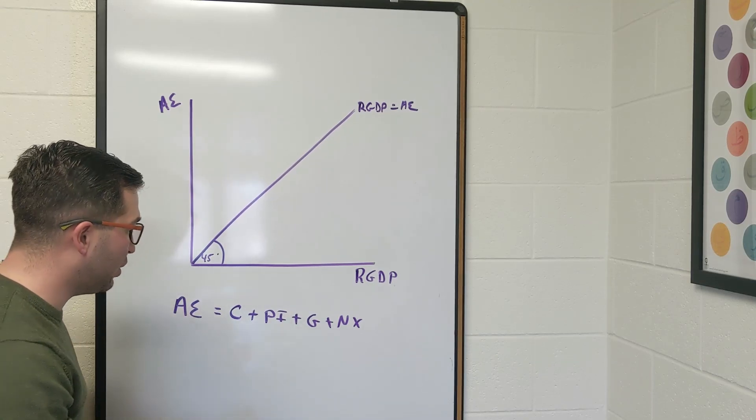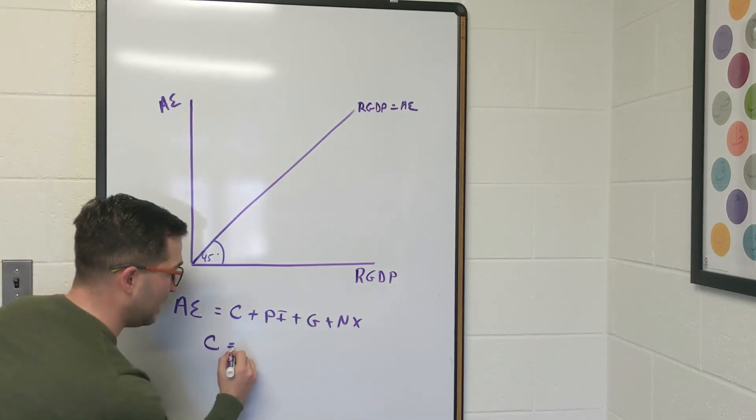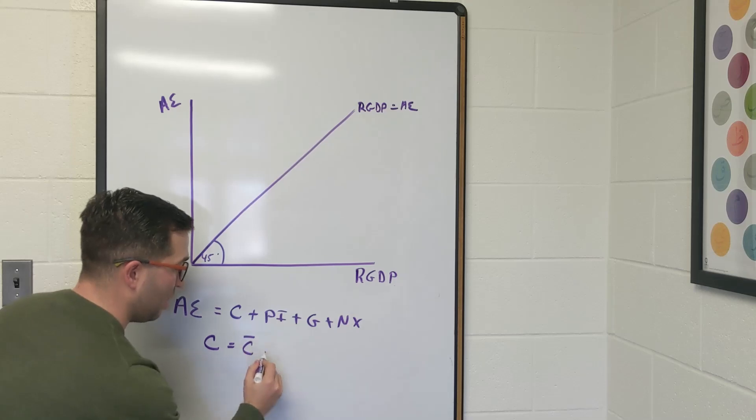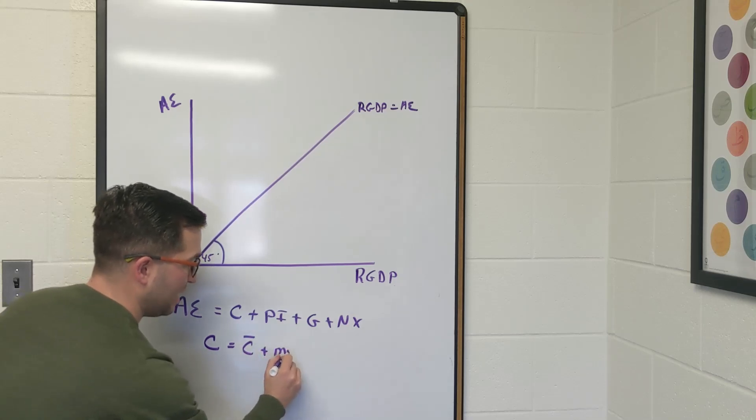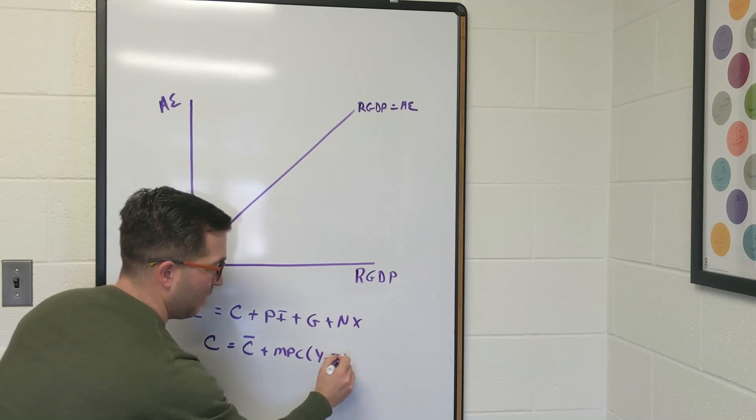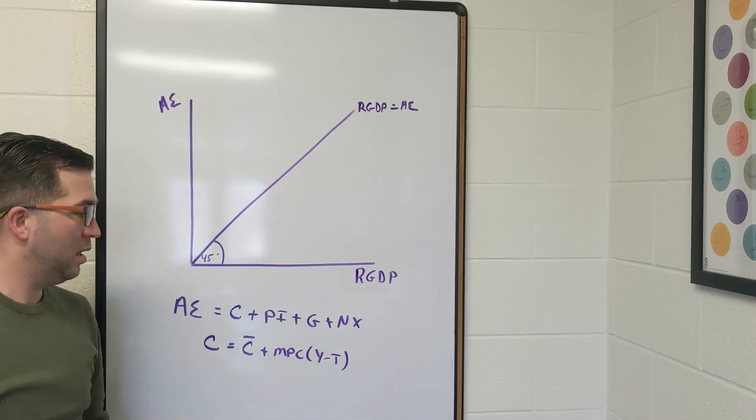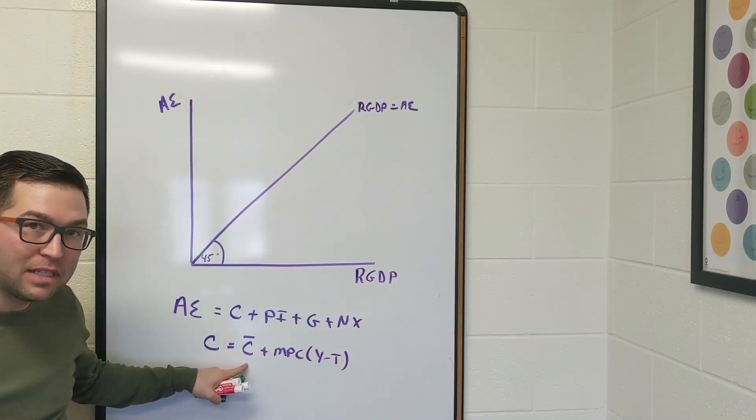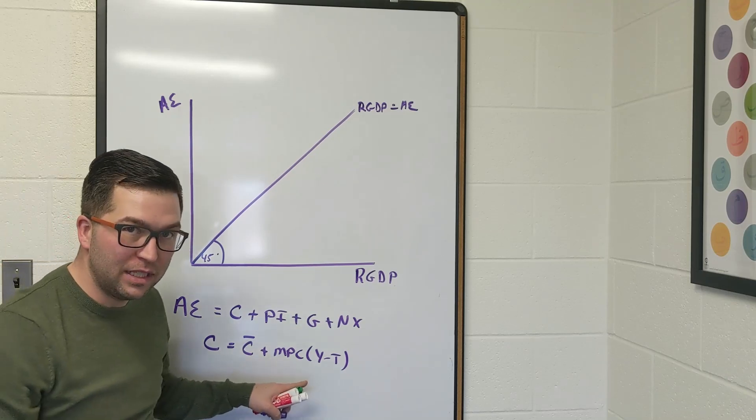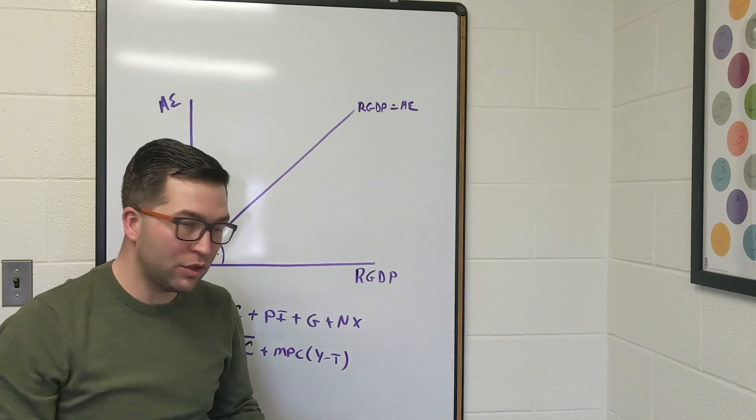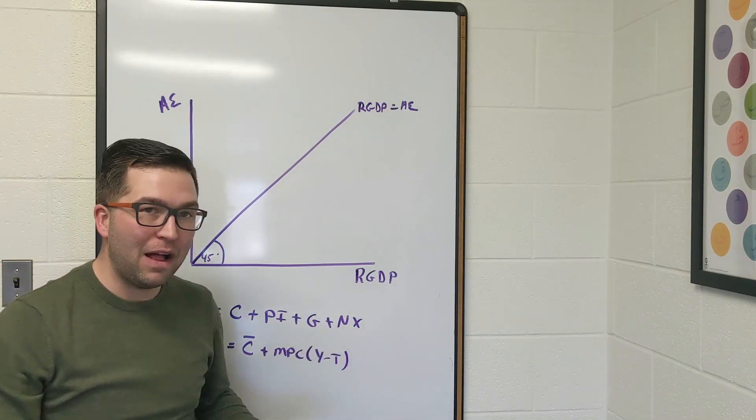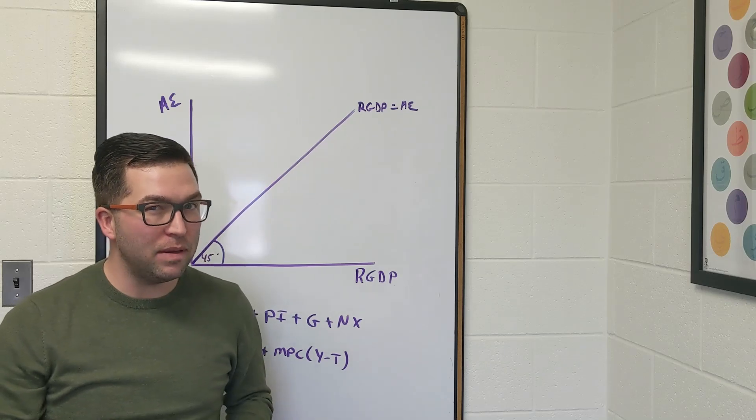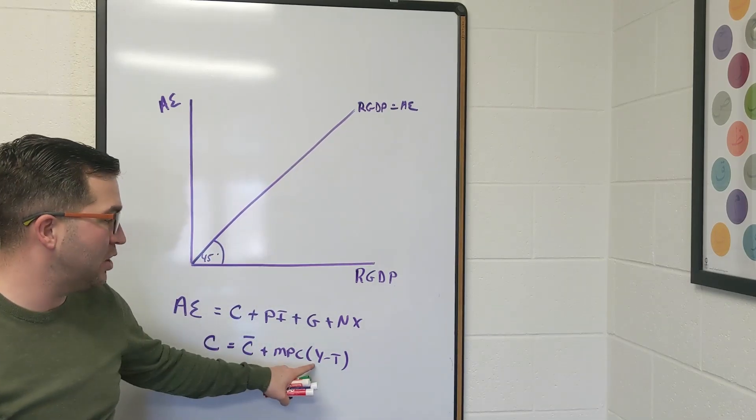We know the consumption function. We know that consumption is equal to C bar plus MPC times (Y minus T bar), where we have autonomous consumption and marginal propensity to consume. What we're going to assume is all of these other values don't depend on GDP that much. Consumption depends on GDP.